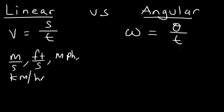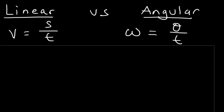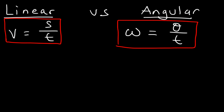Angular speed is the angle divided by the time, so it could be degrees per second, radians per second — which is more common — or even revolutions per minute, described as RPMs. Make sure you know these two equations: v = s/t, and omega = theta/t. There's one more equation: linear speed is equal to the radius times omega. That's how you connect the two.